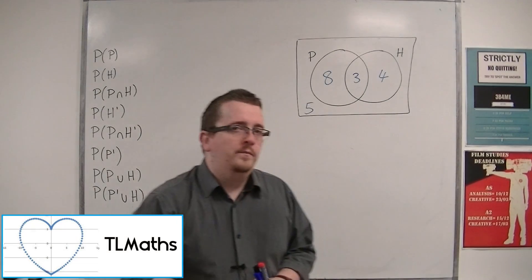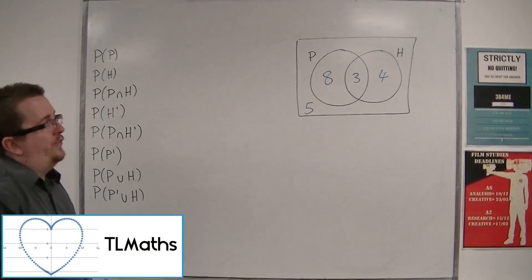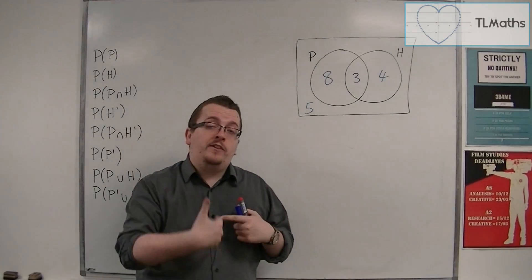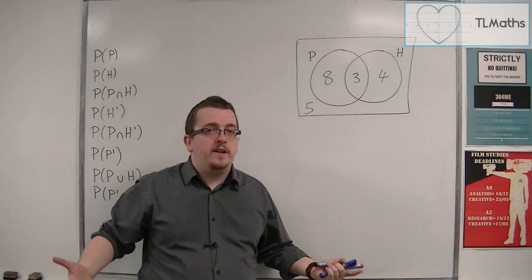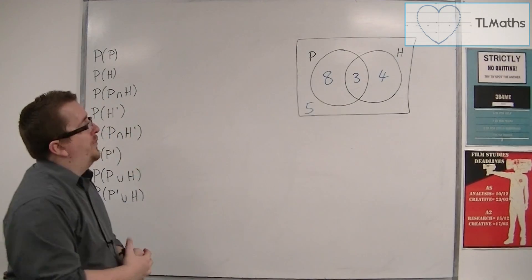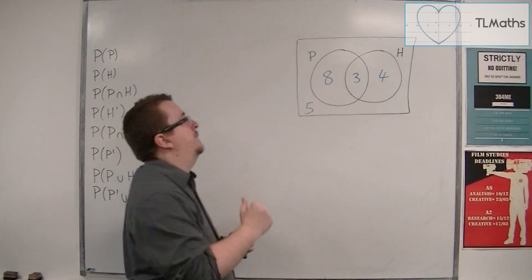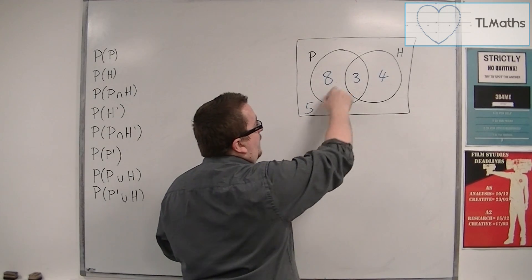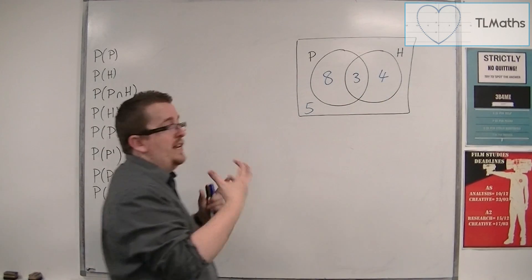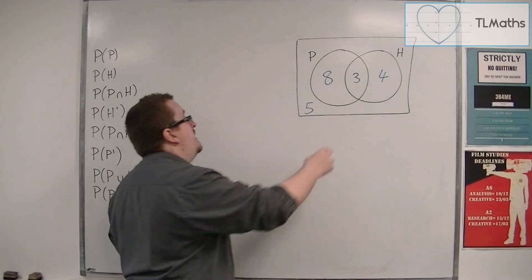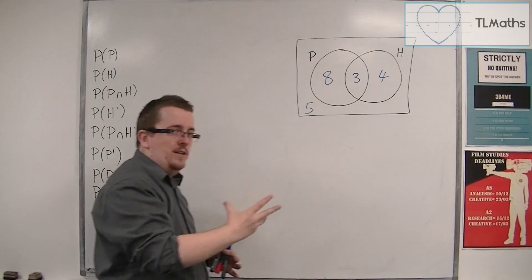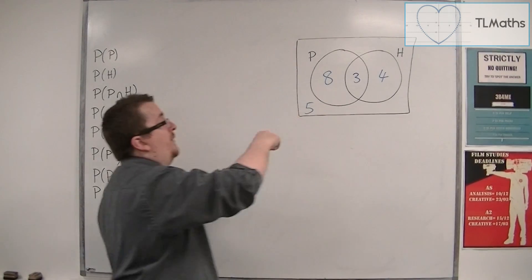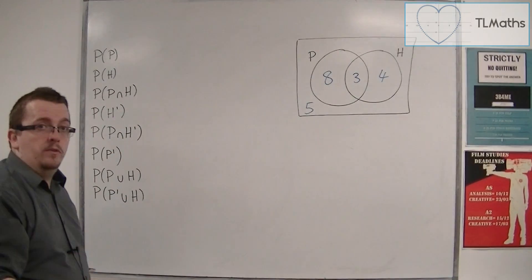Let's look at an example. Let's say I've asked my students whether they study physics or history or both or neither. And what's happened is that I've found that eight people study physics only, four study history only, three people study both physics and history, and five students study neither physics nor history nor both.